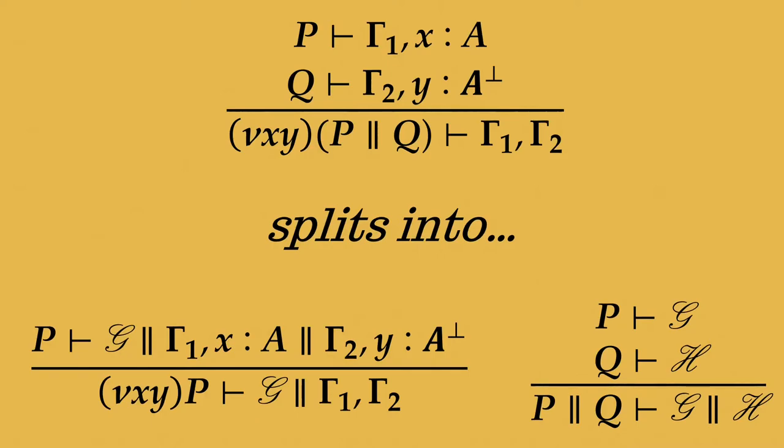So using hyper-environments allowed them to pull apart the constructs in CP while maintaining deadlock freedom. So for example, by using hyper-environments, we can split the CP cut rule into separate constructs for name restriction and parallel composition. So here, read bottom-up, the name restriction rule introduces a hyper-environment separator between environments Γ₁ and Γ₂, extending Γ₁ with endpoint x and Γ₂ with endpoint y. The rule for parallel composition then just makes trivial use of the parallelism that's already registered in the hyper-environment.